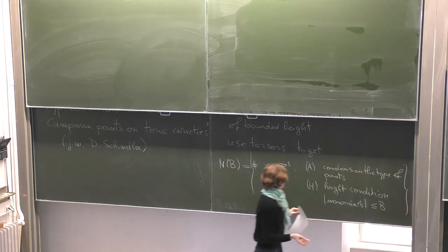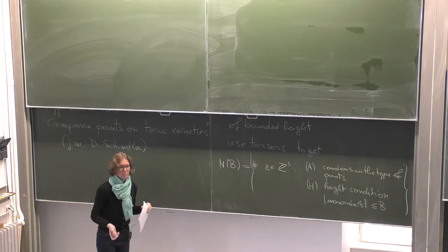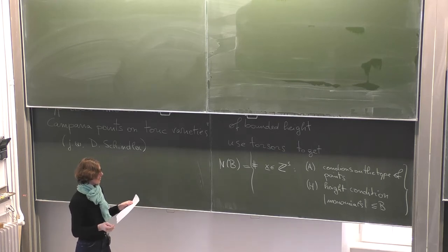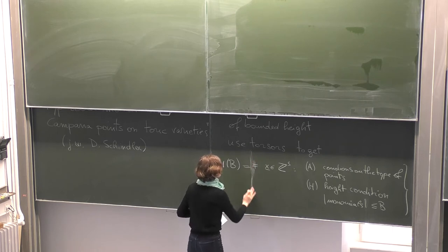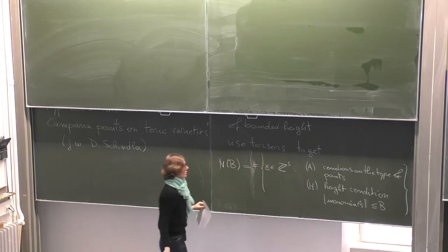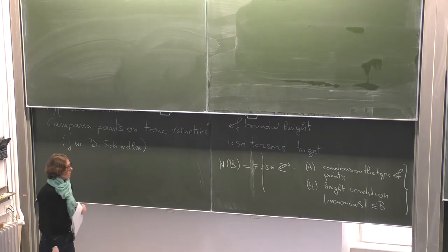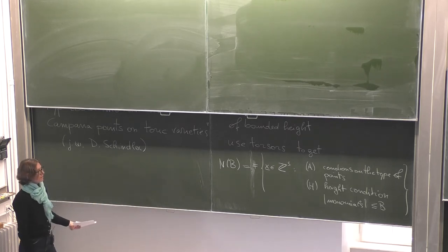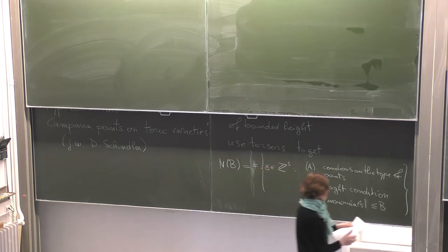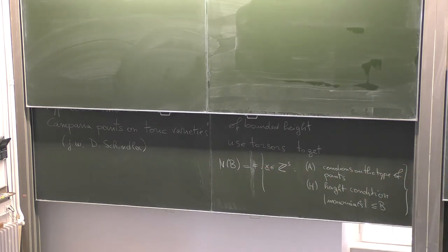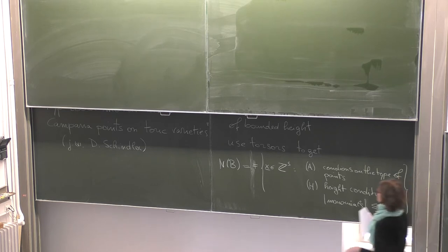This is the general setting. I don't want to go into the geometry of how to get here, but I want to talk about how to approach these kinds of problems. What I want to do today is separate condition A and condition H and treat them separately. This is what stays at the core of the application of the hyperbola method to count rational points.